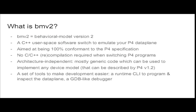BMV2 trades off performance to be 100% compliant with the P4 spec. There is no recompilation required when you switch a P4 program. It's also architecture-independent, which means BMV2 is essentially a library that can be used to emulate any P4-enabled device — maybe an ASIC, maybe a NIC, anything that can be programmed using P4. We also have a set of tools to make development easier: a runtime CLI to program the data plane, and a GDB-like debugger which I'll be presenting tomorrow at the workshop.